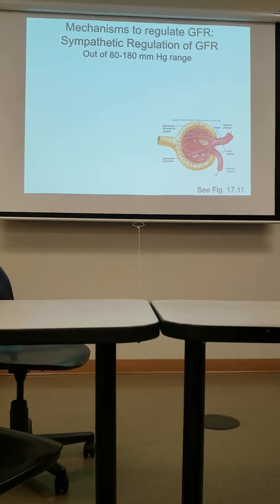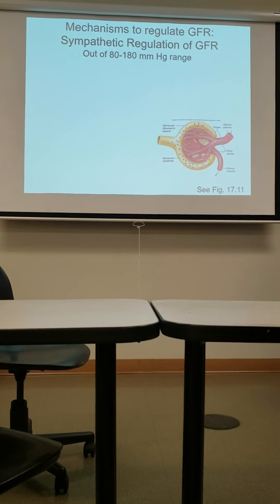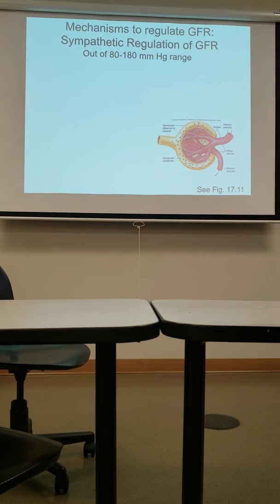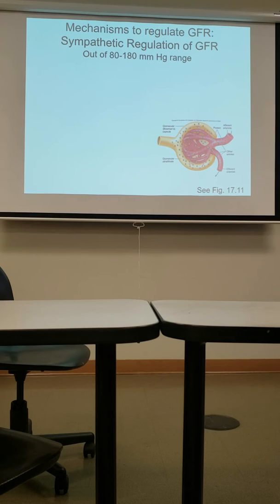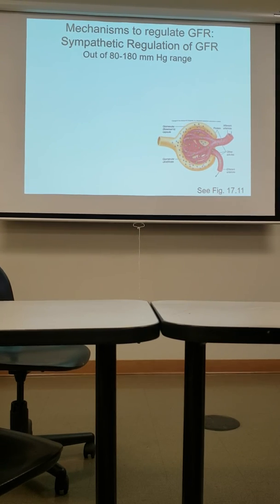So this gets us into thinking: let's make sure we can still filter appropriately given our blood pressure. You know your blood pressure changes all the time. 120 over 80 is when you're just sitting and chilling. But when you start doing things, your blood pressure can automatically change. For example, the sympathetic nervous system — what state are you in when you're in sympathetic nervous system activation? Fight or flight.